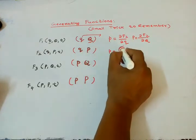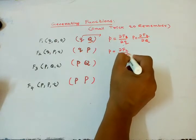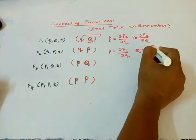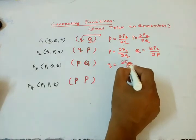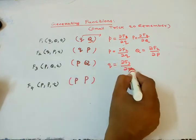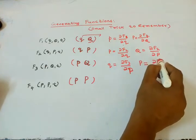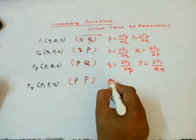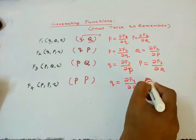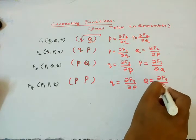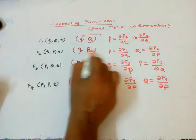For F2, where small q is present, we write small p. Then for capital Q, we write the equation with ∂F2/∂q giving capital Q. For F3, the equation involves ∂F3/∂q. For F4, the equations involve ∂F4/∂p with capital Q, and ∂F4/∂p with small q in the denominator.